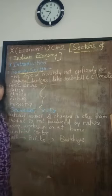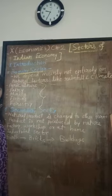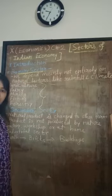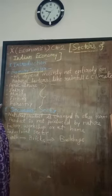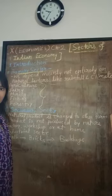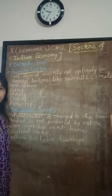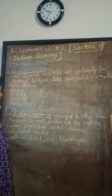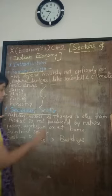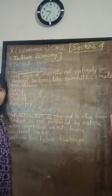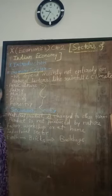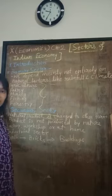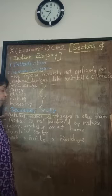These activities are therefore classified under the primary sector. The next is the secondary sector. Under the secondary sector, what we are doing is changing the form of the natural products that we have. This could be either in industries or in factories.